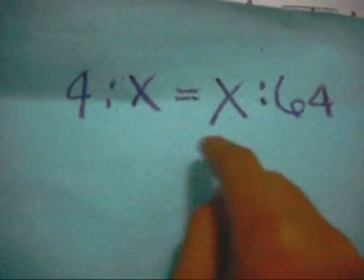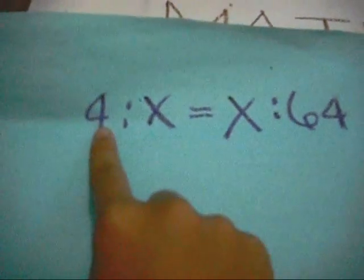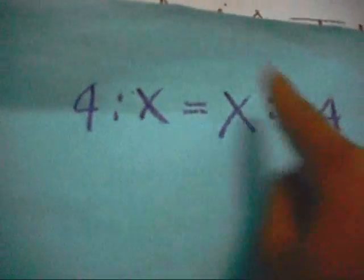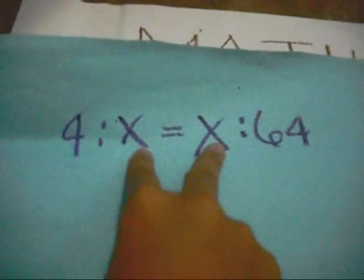X and X are the means. In a proportion, when both the extremes are multiplied, the product should be equal to both the means too.